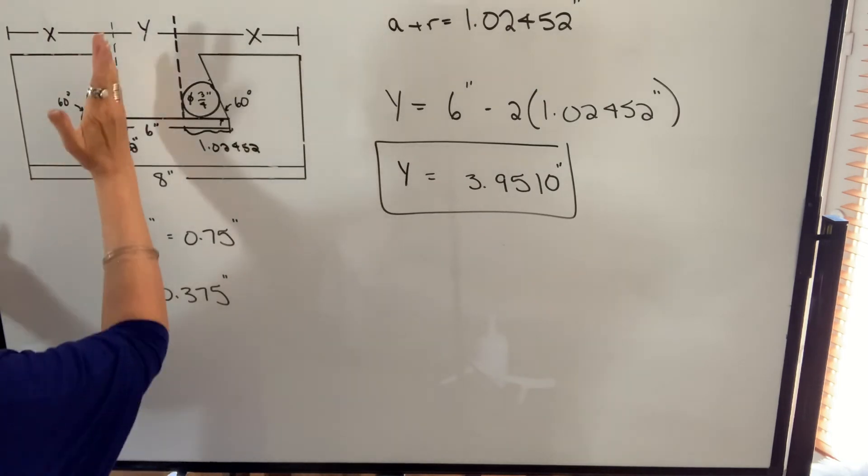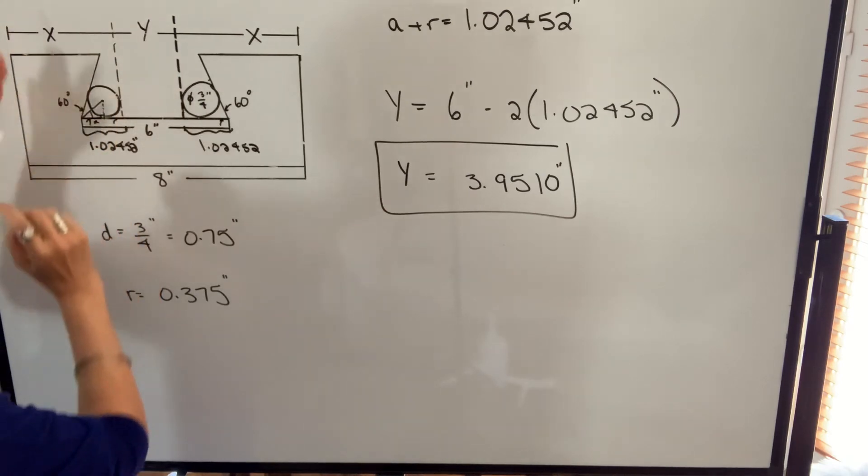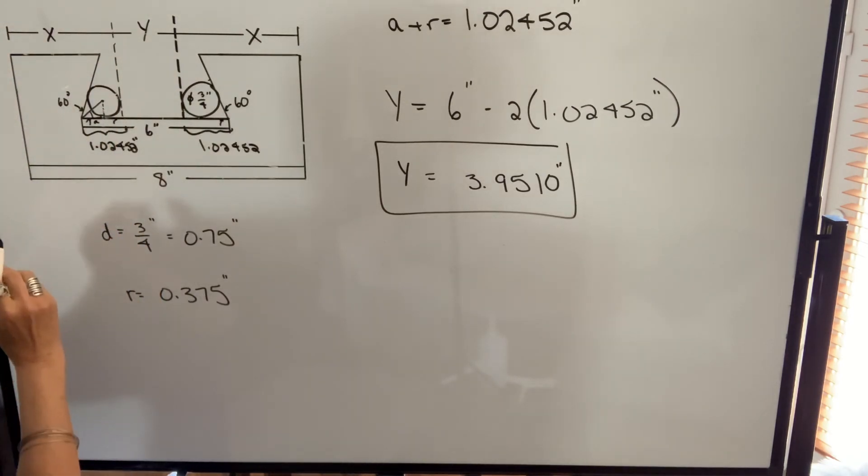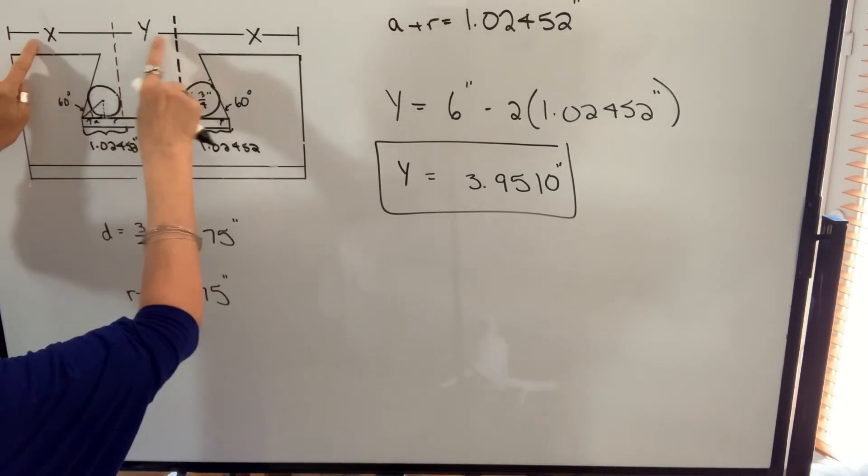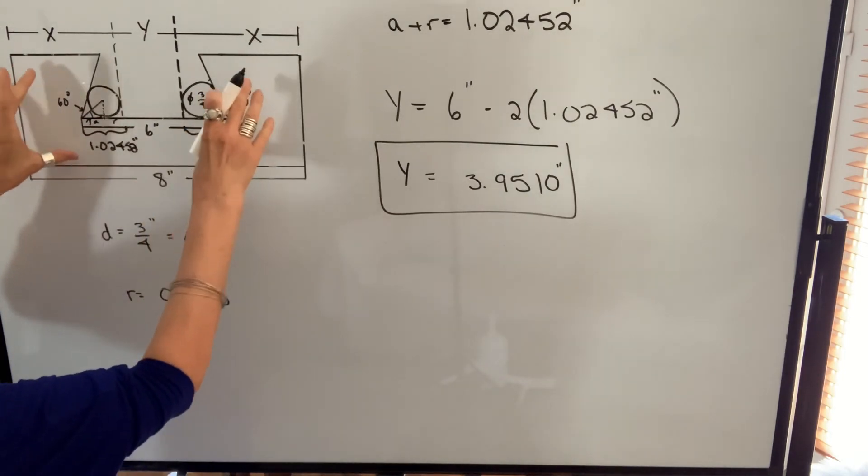We can also measure from the crown of this pin to the outside edge here, which is X. And in order to find what X should be, we know that X plus Y plus X will equal 8 inches. Assuming that our dovetail is centered.